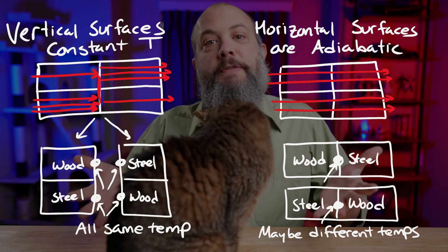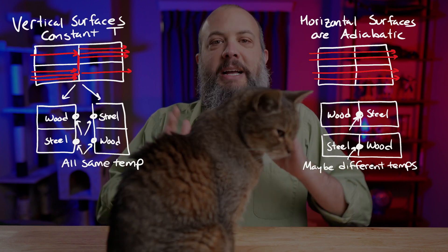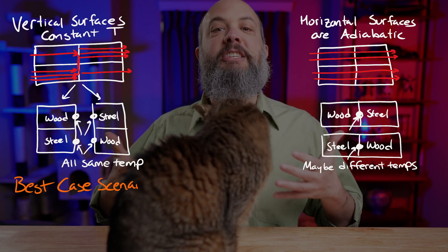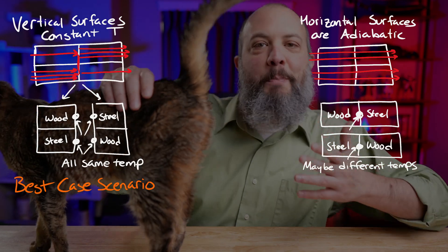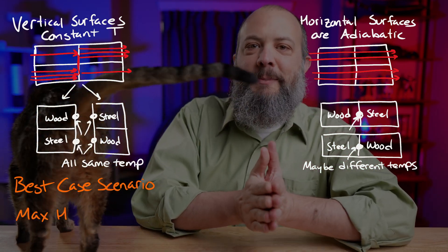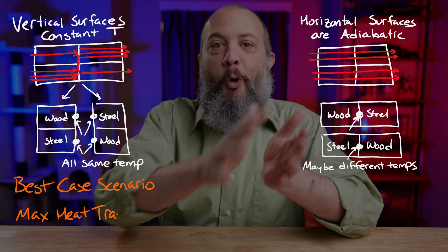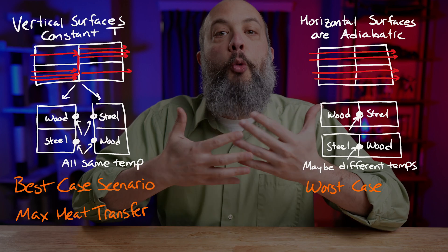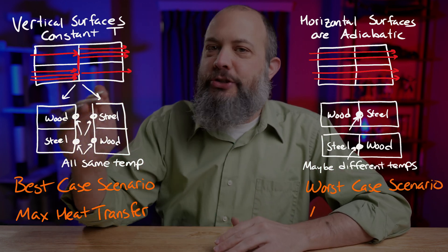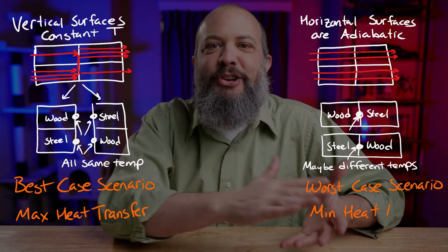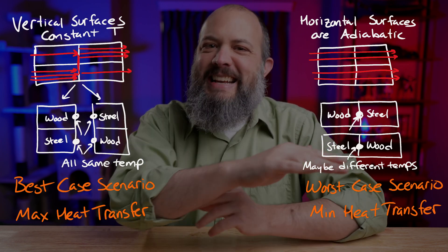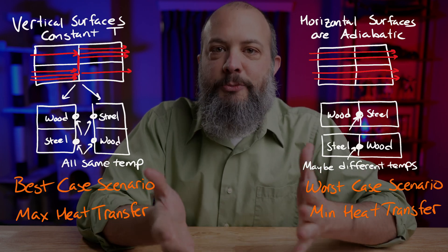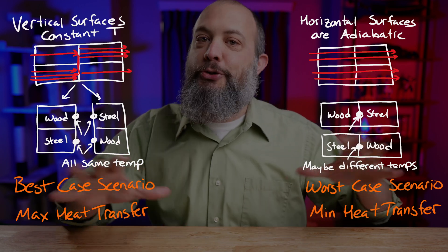If you're trying to choose which assumption to use for a given problem, the real answer is maybe you should do both. By slicing the wall vertically and assuming vertical sections are at the same temperature, you're giving the system the best possible case scenario — finding an upper bound for maximum possible heat transfer, because you're allowing all energy to instantaneously warp to take the path of least resistance. Whereas slicing horizontally is a worst case scenario, forcing energy to take paths it might not otherwise want, giving you a lower bound — the minimum possible heat transfer.